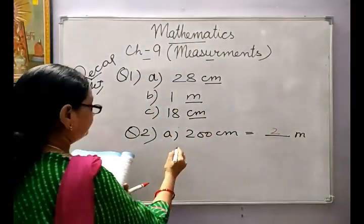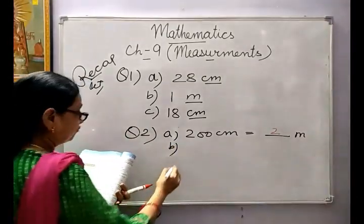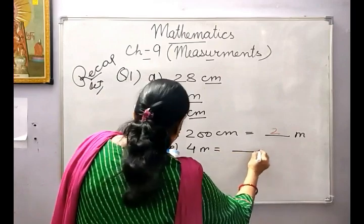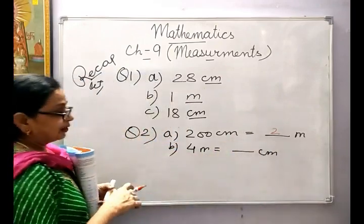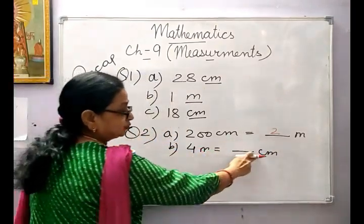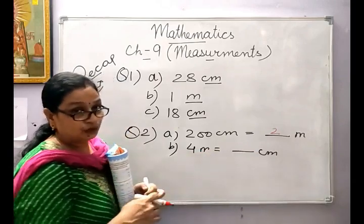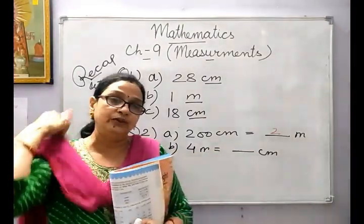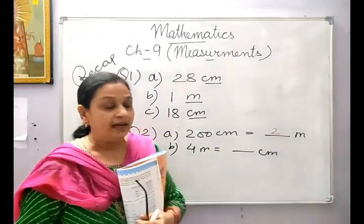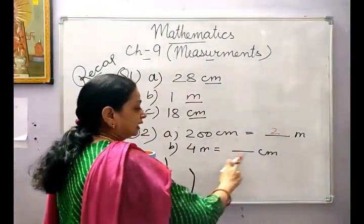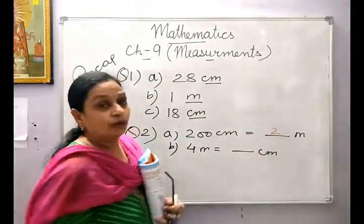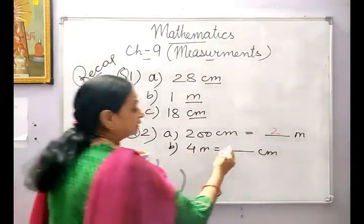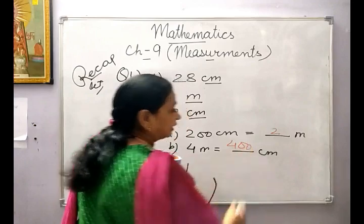B: 4 metres is equal to dash centimetres. In this, you are moving from metre to centimetre — higher to smaller unit — so we always multiply. There are 100 centimetres in 1 metre, so we multiply by 100. 4 into 100 becomes 400 centimetres.